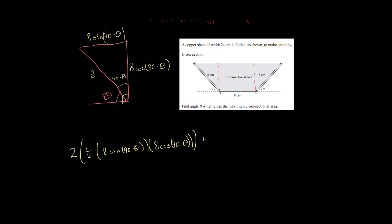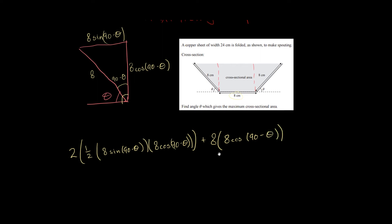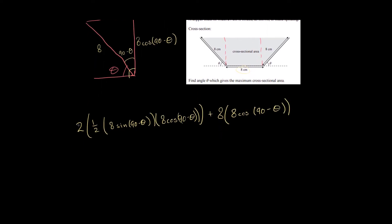And to it, I'm going to add the area of the rectangle. The area of a rectangle is just base times height. My base is 8, as you can see right there. So we have 8 times my height, which is just the same height as the triangle, so it's 8 cosine of (90 minus theta). Now let's simplify a few things. This 2 and the one half cancel out.